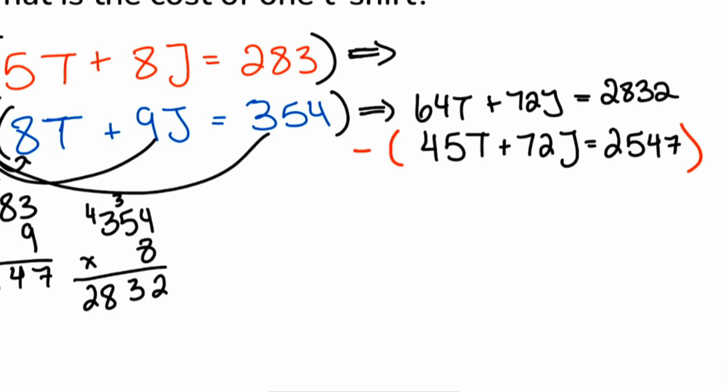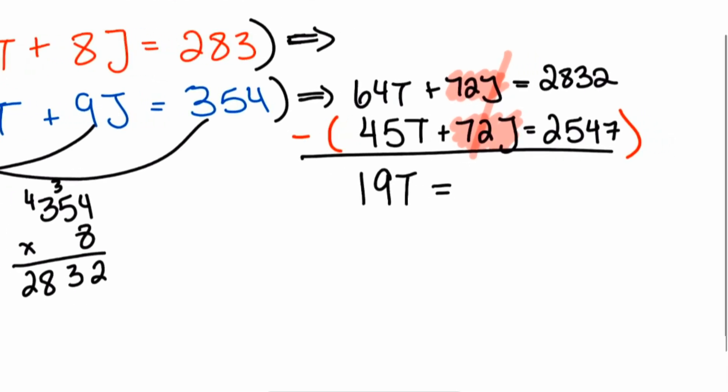Again, check this out right over here. We have 72J, 72J. That's going to cancel out when you subtract, leaving you with 19T equals whatever this difference will be.